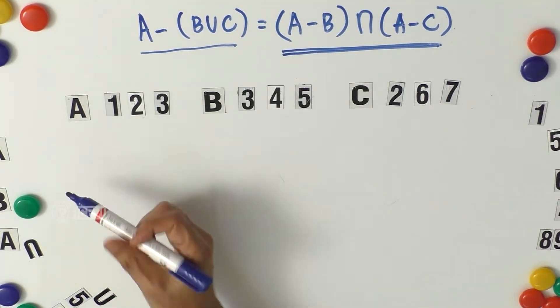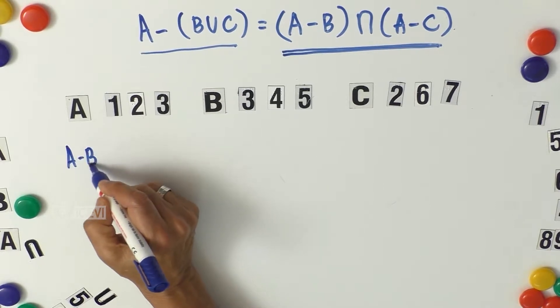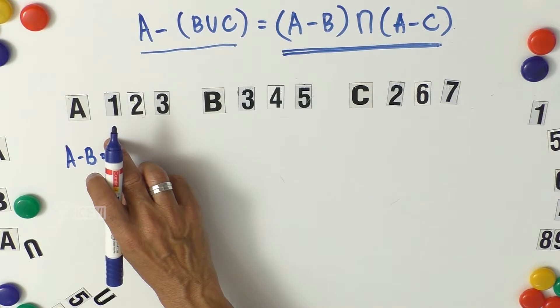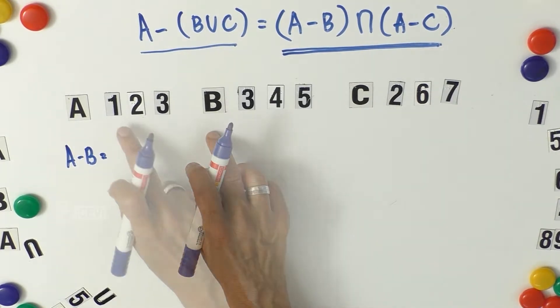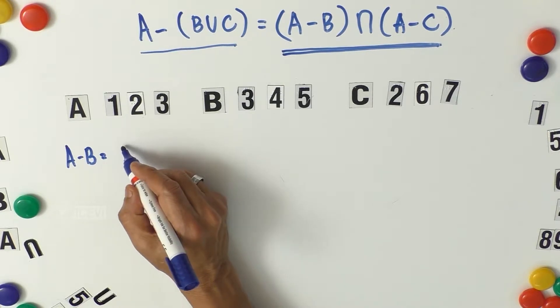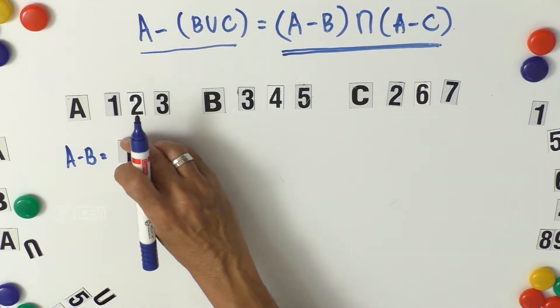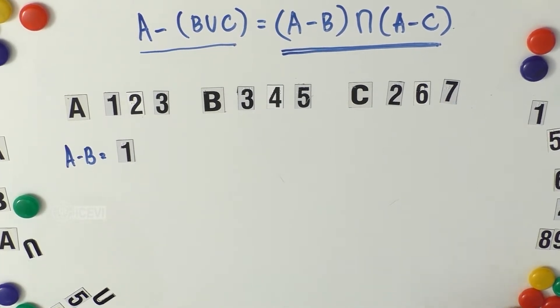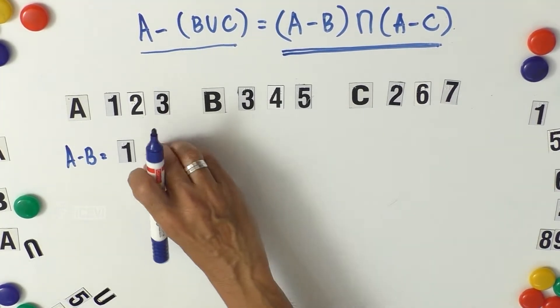Let us find out A minus B. What is A minus B? The objects of set A which are not in B. What are the objects not in set B? That is 1 and 2. So A minus B is 1 and 2.